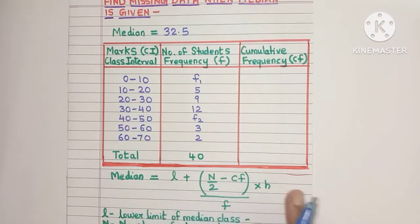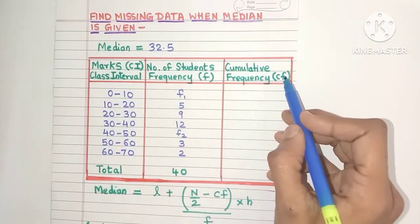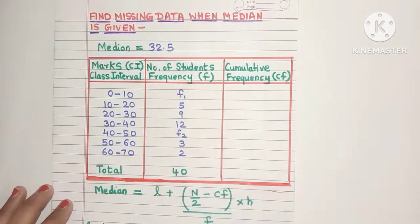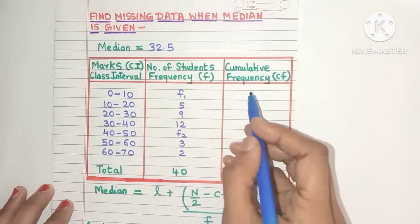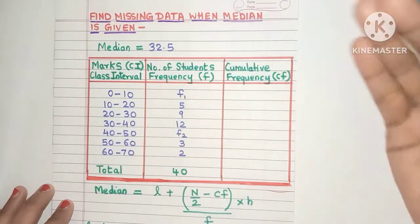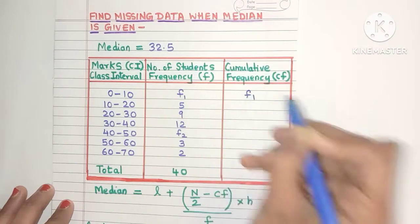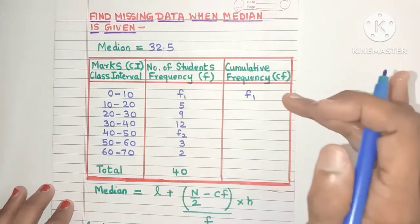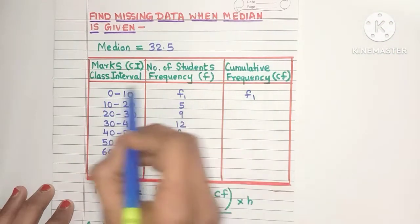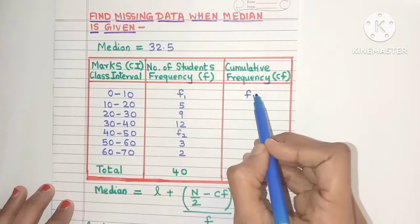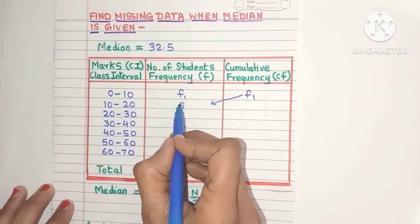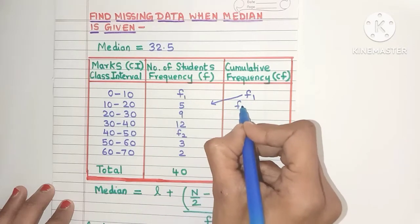To find all these values we need to create a new column called the cf column, or the cumulative frequency column. Cumulative frequency is added frequency. For the first class interval, the cf value will be the same as the frequency value because there's nothing before it to be added, so the cf value will be f1. For the next class interval, you simply add the cf of the previous class interval — f1 — to the frequency of the present class interval, which is 5. So we get f1 plus 5.